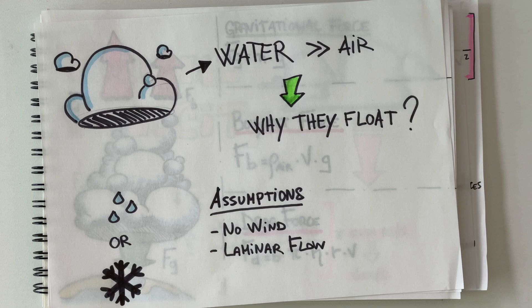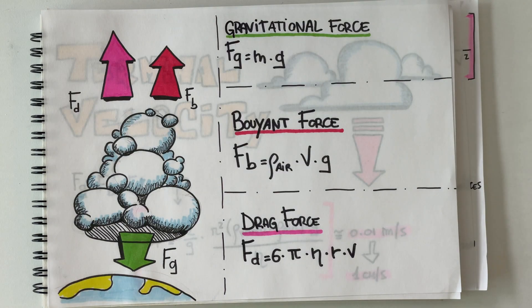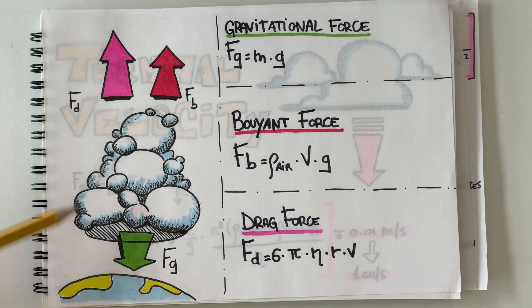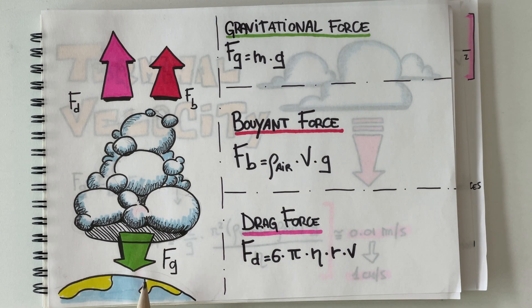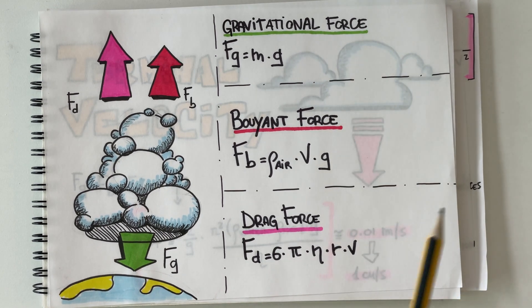In this situation we can identify three main forces acting on our little cloud. So we have our little cloud right here which is trying to fall to the earth and we have three different forces. Let's start with the gravitational force.